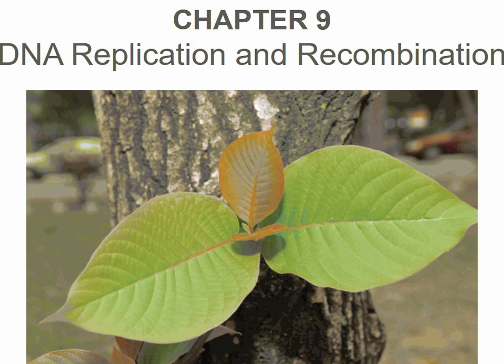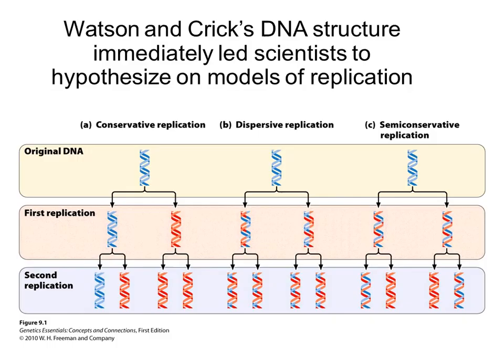In chapter 9 we're going to look at DNA replication. Even though the title of this chapter says DNA replication and recombination, we're not going to cover the recombination. We will cover DNA replication, which is the process during cell division or preceding a cell division in which the monad chromosomes become dyad chromosomes. Everything in chapter 9 has to do with that process, really digging down into the details.